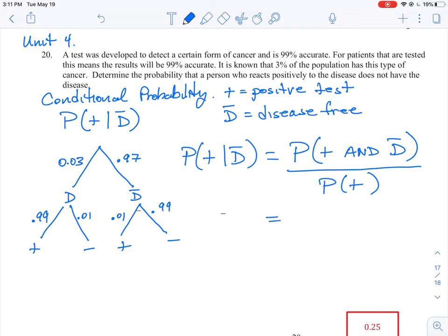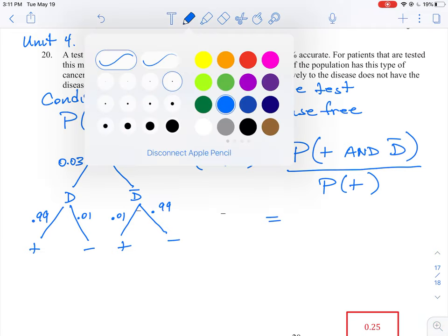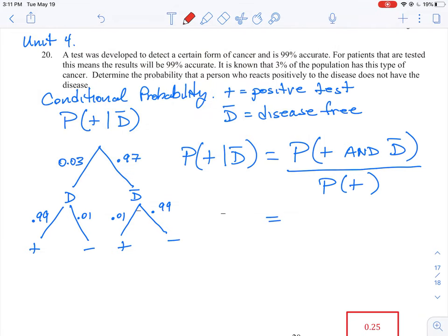So we just need to walk through the tree legs here and figure out what numbers we are going to put together. If we are positive and we do not have the disease, that means we go down this tree here and we go to the positive results. So the probability of that happening is 0.97 times 0.01.